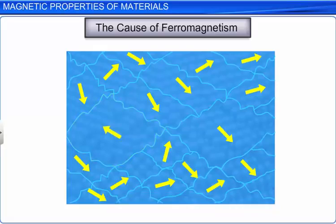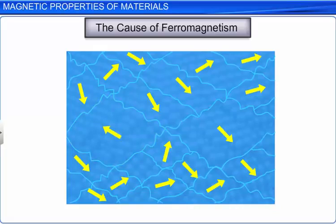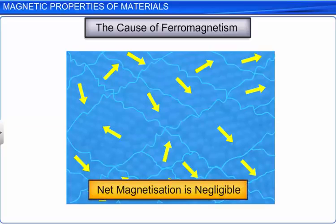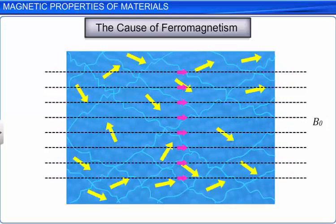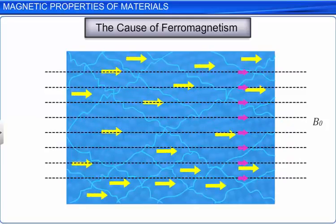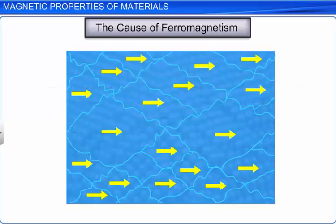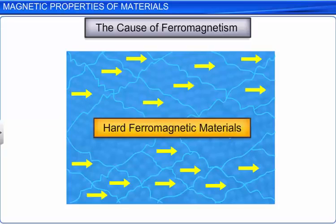Each domain contains about 10 to the power 11 atoms and each domain has a net magnetization. The magnetization changes from domain to domain. Thus, the net magnetization of a ferromagnetic material is negligible. When a bar of ferromagnetic material is placed in an external magnetic field of induction B0, the magnetization of the domains orient in the direction of the applied magnetic field. When the external magnetic field is removed, some ferromagnetic materials can retain the magnetization, and such materials are called hard ferromagnets or hard magnetic materials.